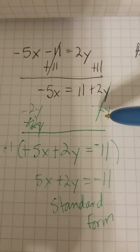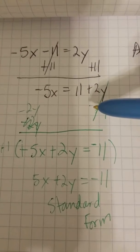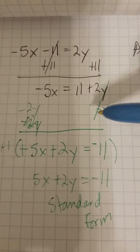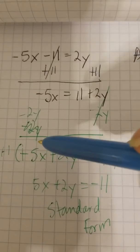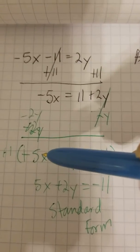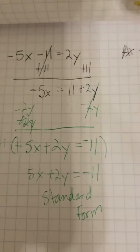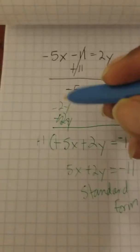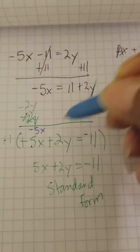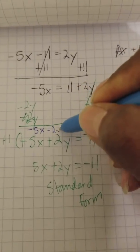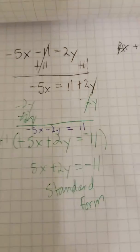And from there, we subtracted 2Y from both sides and we ended up with negative 5X. Let me write that so you won't be too confused. So we had negative 5X minus 2Y equals 11.